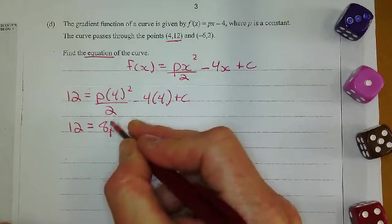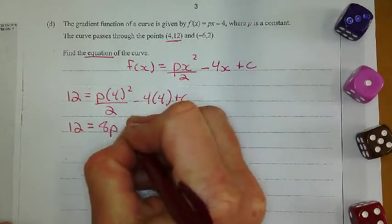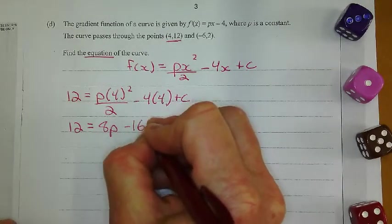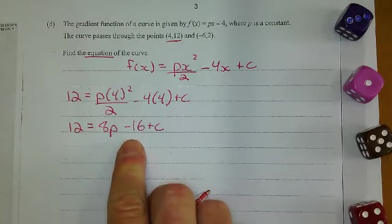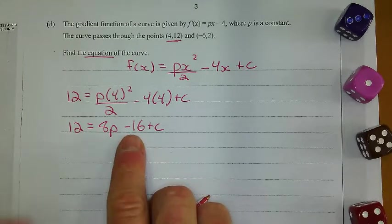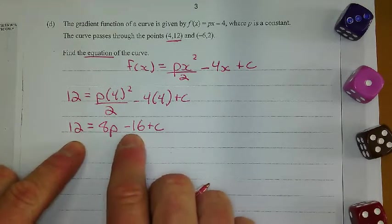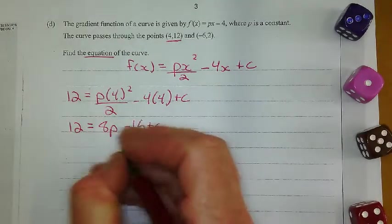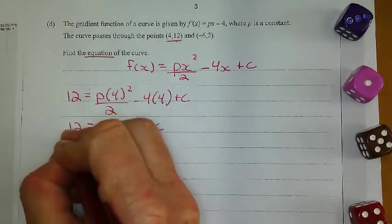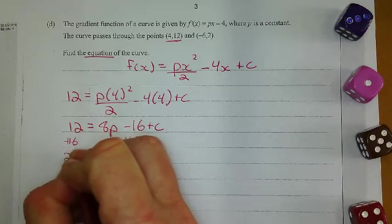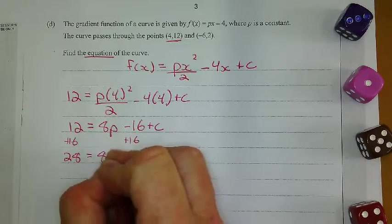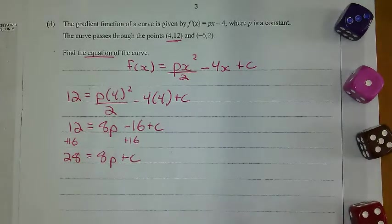minus 16 plus c. And then what I'm going to do is add 16 to both sides here. And I'm getting, when I add 16 to both sides, I get 28 equals 8p plus c.